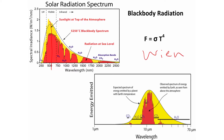This is the black body spectrum for 5,250 degrees which can be computed easily. The red curves here are the various gases in the atmosphere that are sensitive to incoming short wave radiation. When we did the radiative equilibrium calculations, we said the atmosphere is allowing all the short wave energy to go to the surface — obviously a simplification.